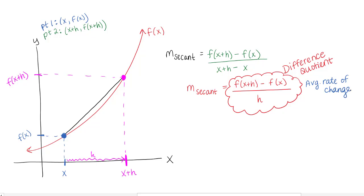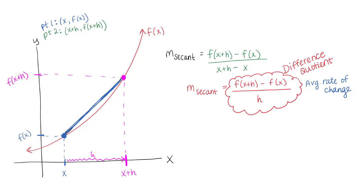The average rate of change of the function tells you, if you traveled from your home to school at one constant speed the whole time, what would that speed be? Versus speeding up and slowing down — like going on a freeway, side streets, stopping at stoplights and stop signs. So maybe my average rate of change or average speed might be 32 miles an hour.